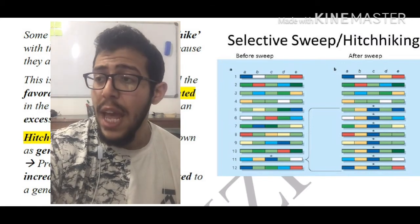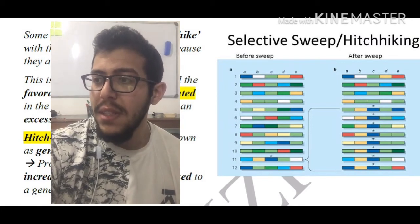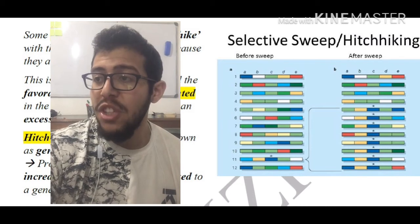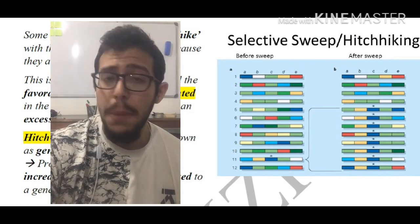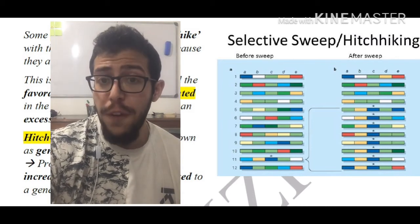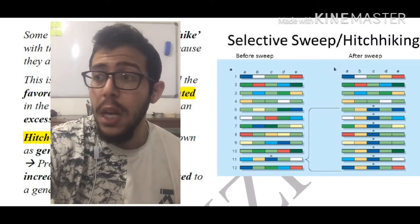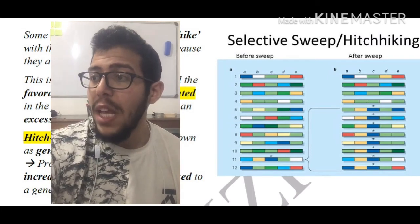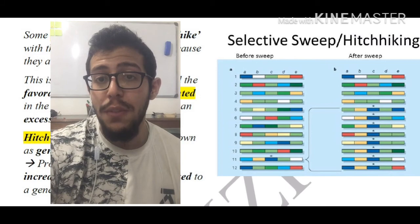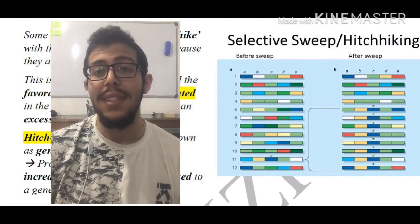These particular genes, the yellow and green, might not be necessarily good or favorable. They might simply be neutral. However, they are simply present due to their relative location to the favorably selected gene.